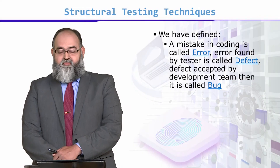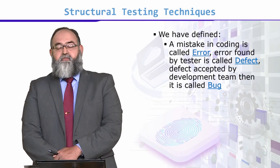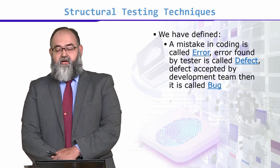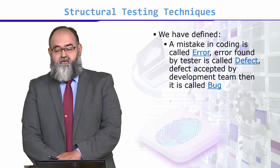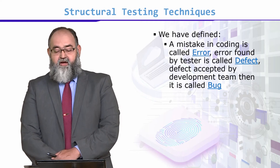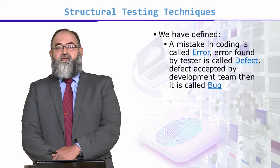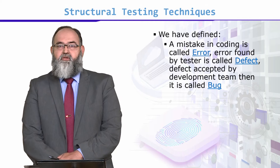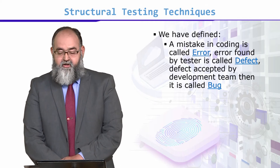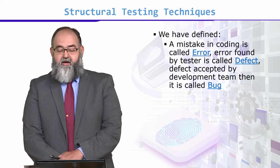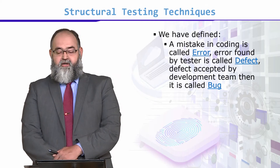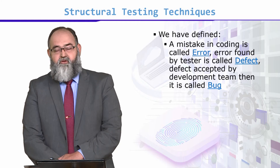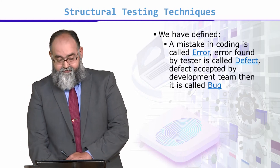As we've already defined, a mistake in coding is called an error. The error, once found by the testing team, is called a defect, and a defect once accepted by the development team is called a bug.